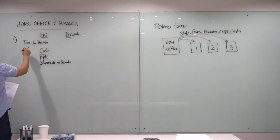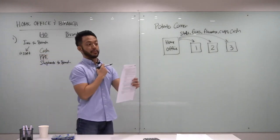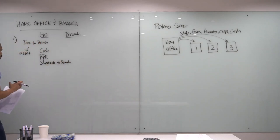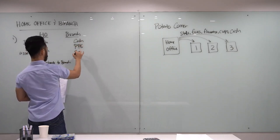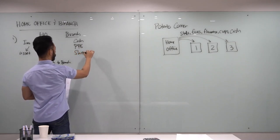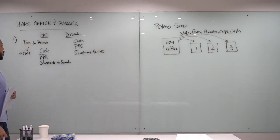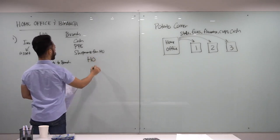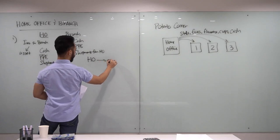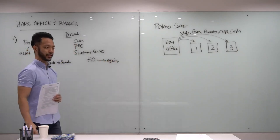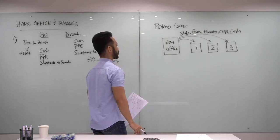The 'Investment in Branch' account is an asset account. So in the home office's balance sheet, it presents an 'Investment in Branch' as an asset. On the branch side, it received cash, PPE, and shipments. Since the home office has 'Shipments to Branch,' the branch records 'Shipments from Home Office.' The credit on the branch side is the 'Home Office' account — which is an equity account in the branch's books.